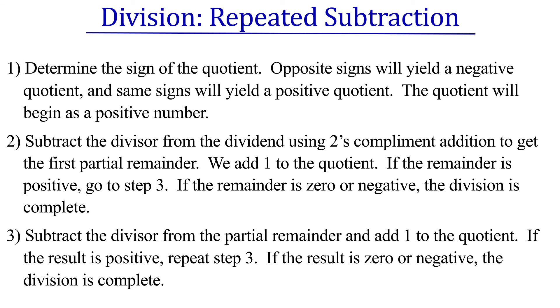Step three. Subtract the divisor from the partial remainder and add one to the quotient. If the result is positive, repeat step three. If the result is zero or negative, the division is complete. Let's see what this loop looks like in action with the following example.